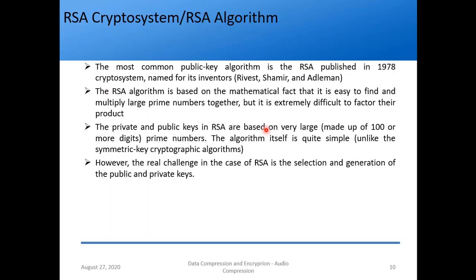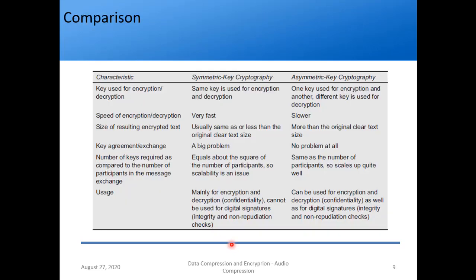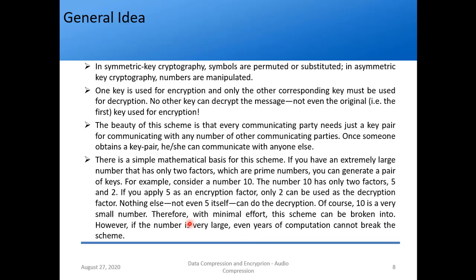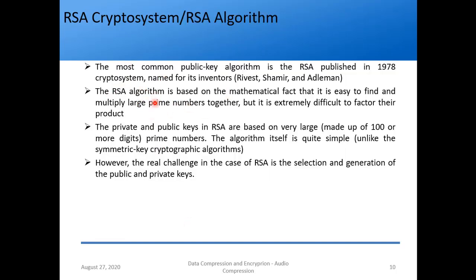The most important algorithm is the Rivest-Shamir-Adleman algorithm, abbreviated as RSA, revised in 1978. Its basis is that it is easy to find and multiply large prime numbers together — just a few lines of code — but extremely difficult to factorize a large number back into two prime factors. Writing that factorization code is extremely difficult, and as stated, it takes years of computation to find the answer. That is the heart of the RSA algorithm.